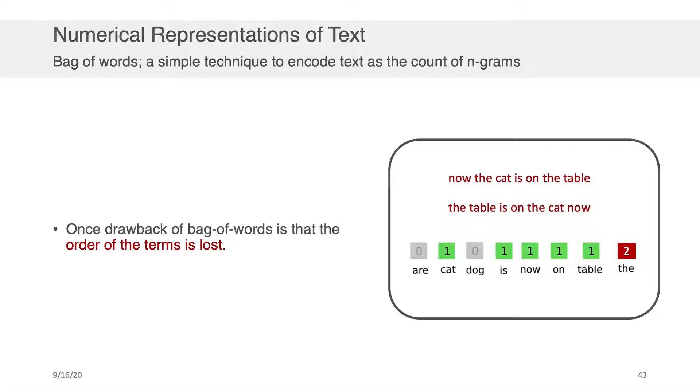But there are some things to be careful of when you're using a bag of words representation, and that is that the order of the terms is lost. Consider, for example, the bag of words representation shown on the bottom right. The cat shows up once, is shows up once, now shows up once, on shows up once, the table shows up once, and the shows up twice. With that particular bag of words representation, I could construct the sentence 'now the cat is on the table' and I could equally validly construct the sentence 'the table is on the cat now.' And there's no way of going from this representation to these representations that may have created it.